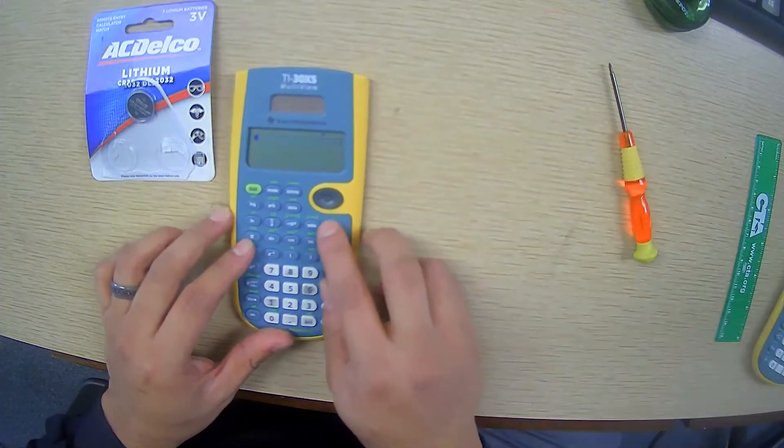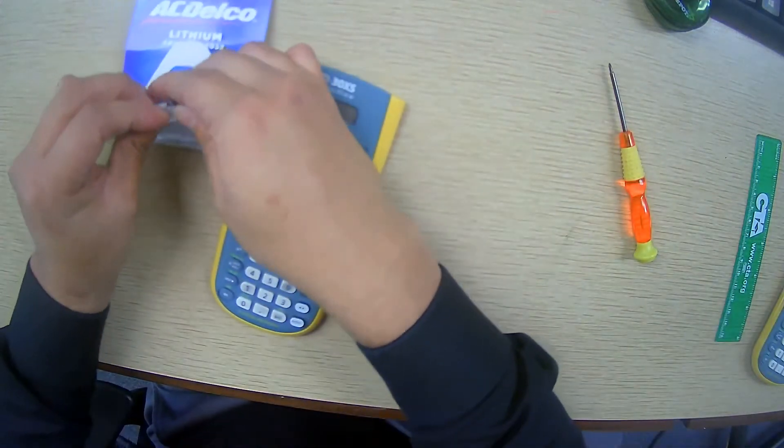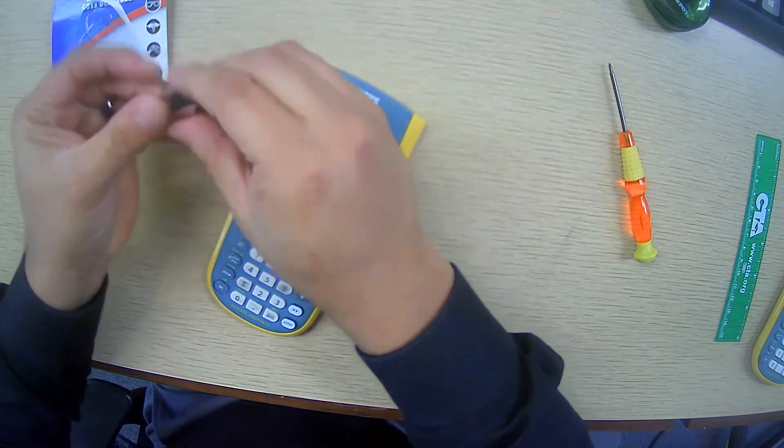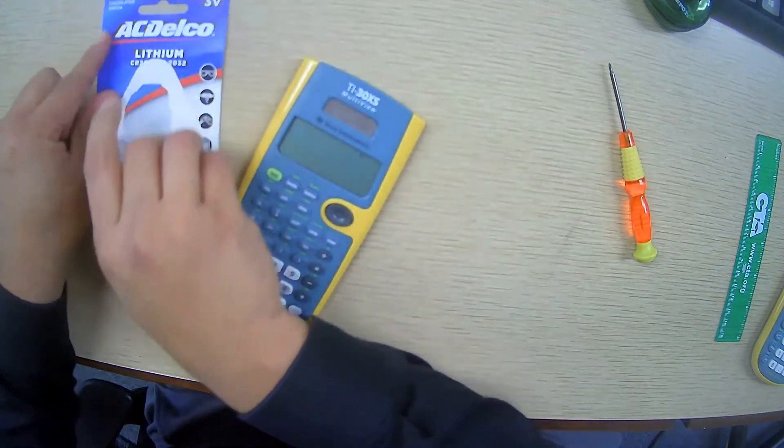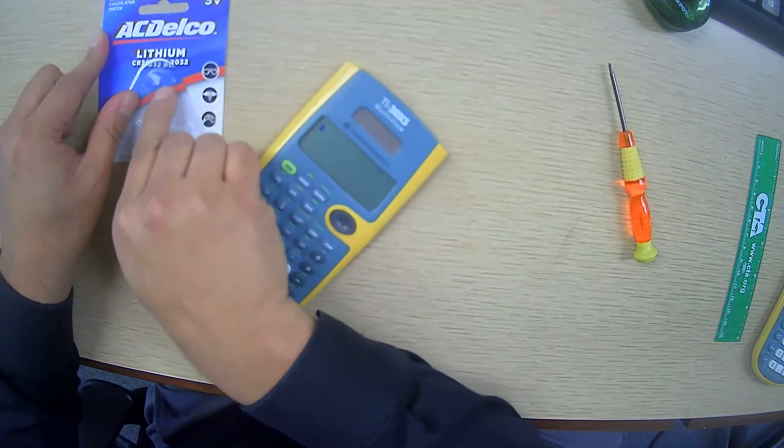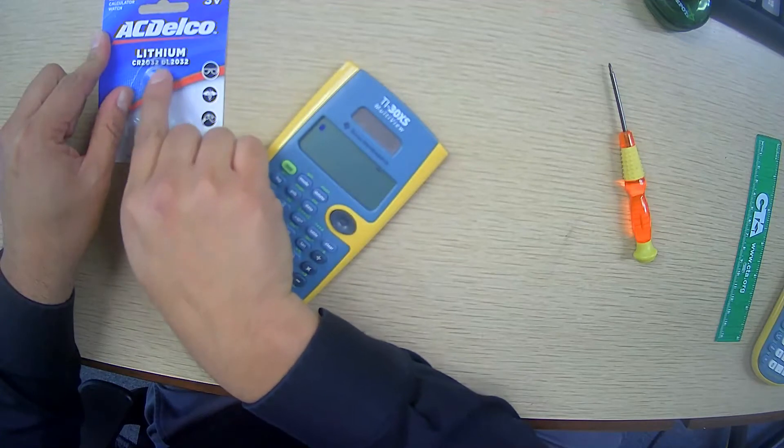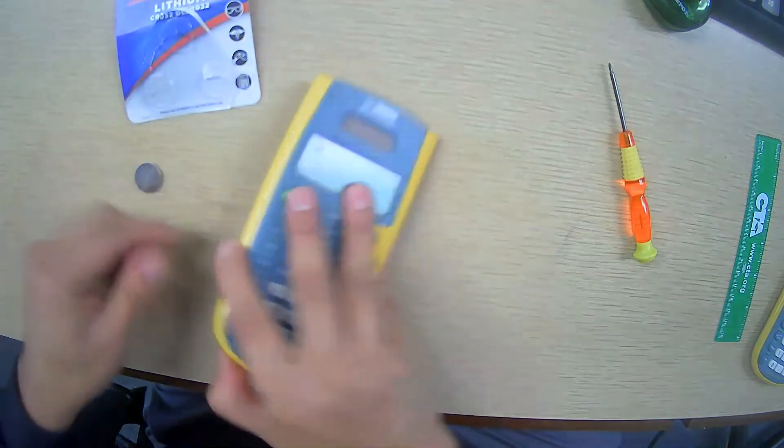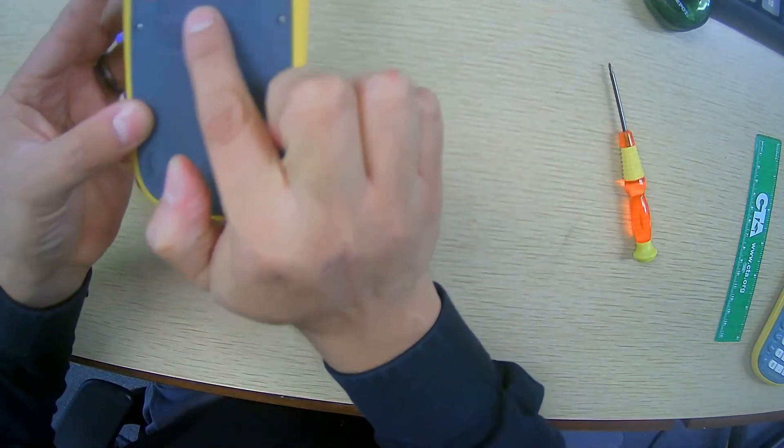We'll put this one to the side. Now you do have to make sure, I don't care about the brand, I'm not sponsored by the brand, but you do have to make sure that the number is 2032, okay? CR2032. That's the number right there, and that also is over here, 2032.